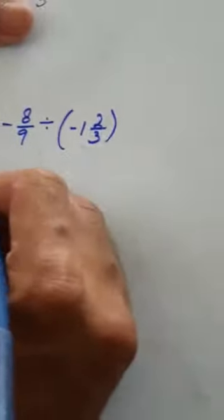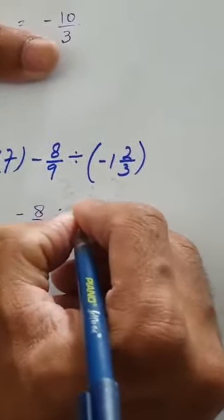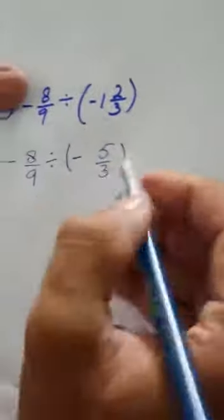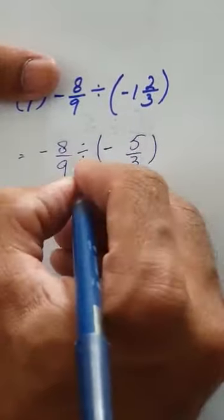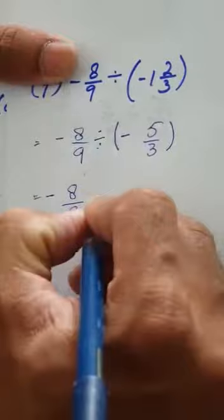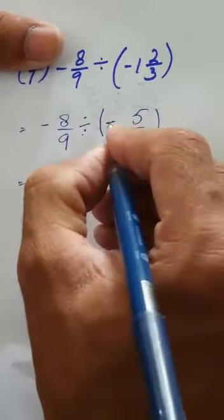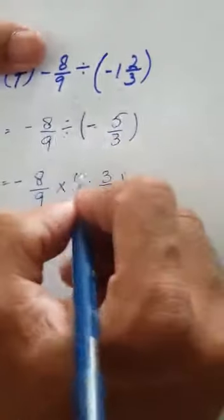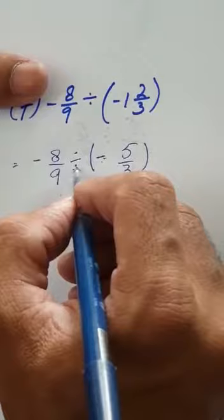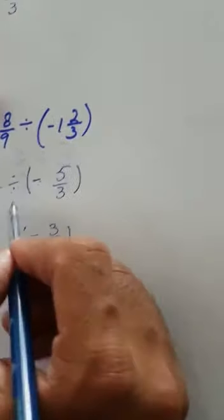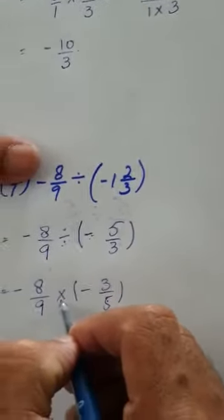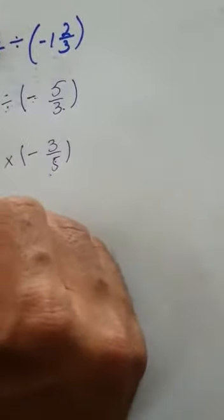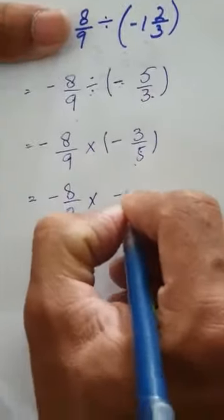In part F we are given minus 8 over 9 divided by minus 1 and 2 over 3. Dissolve the mixed form: 3 ones are 3 plus 2 gives 5, so minus 5 over 3. Now convert division into multiplication: minus 8 over 9 multiplied by minus 3 over 5. I have reciprocated the fraction regardless of sign — when dividing fractions, always convert to multiplication and reciprocate the last fraction.